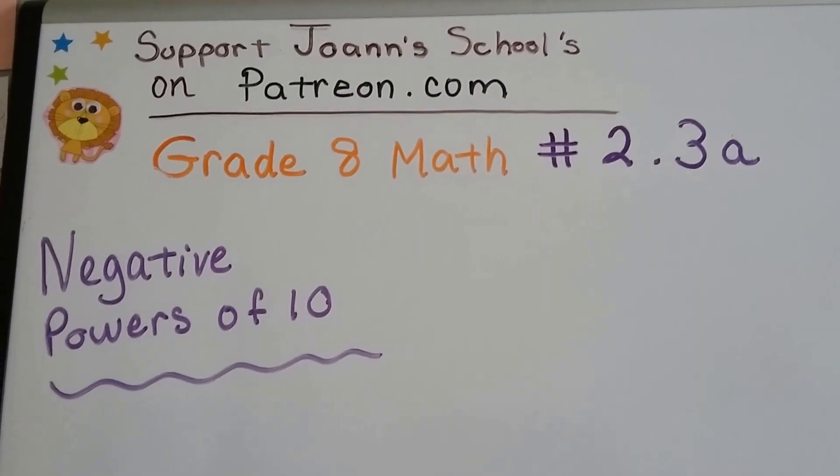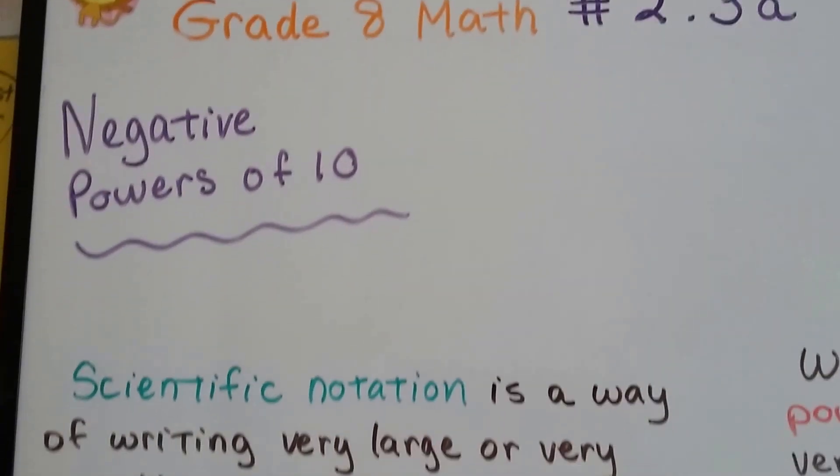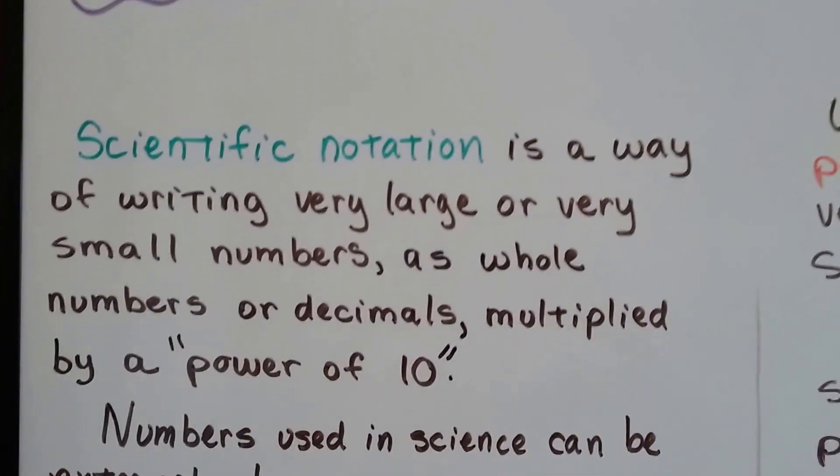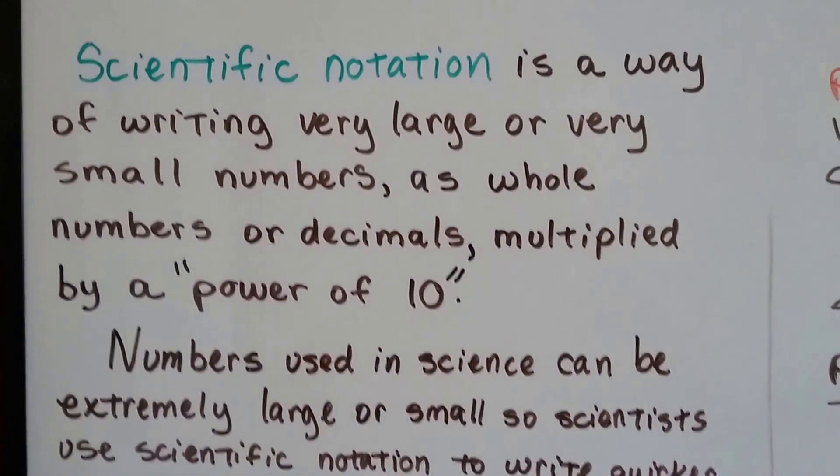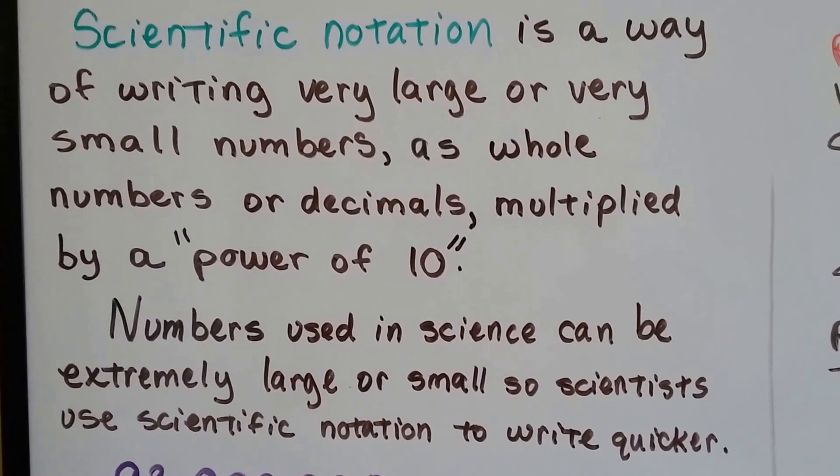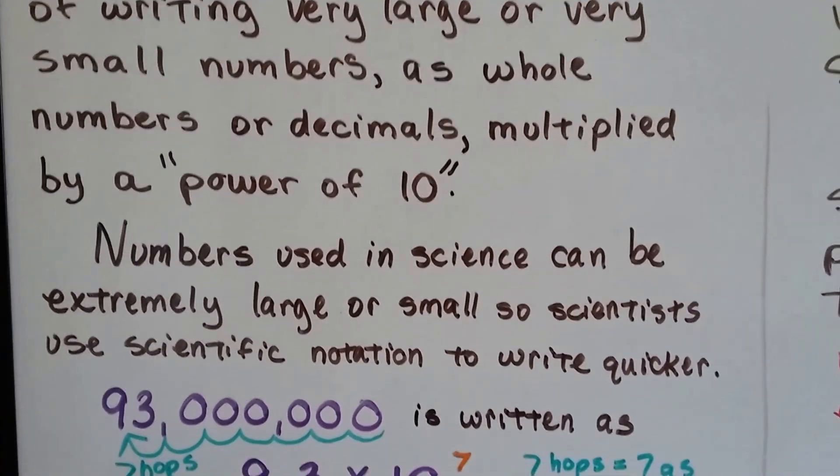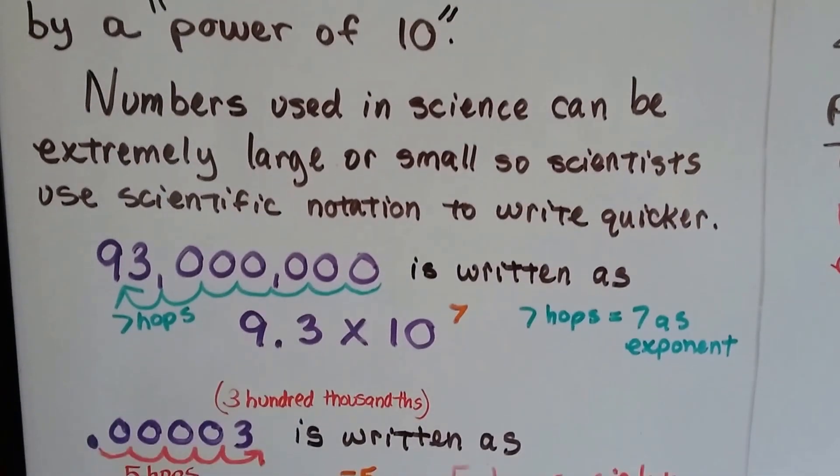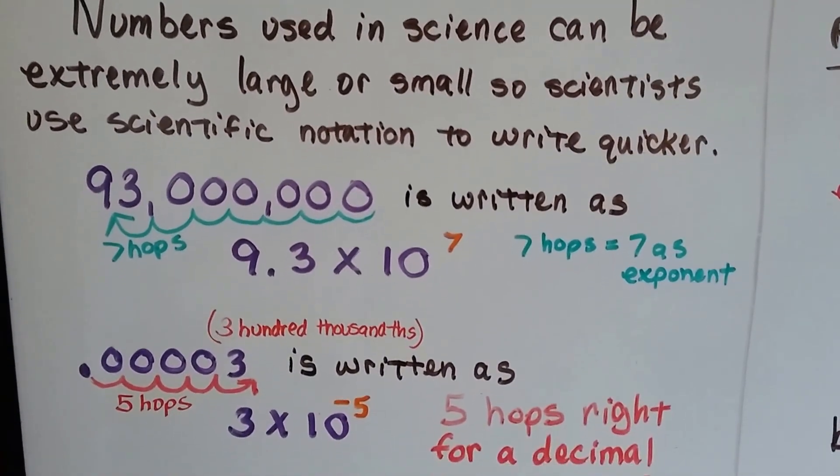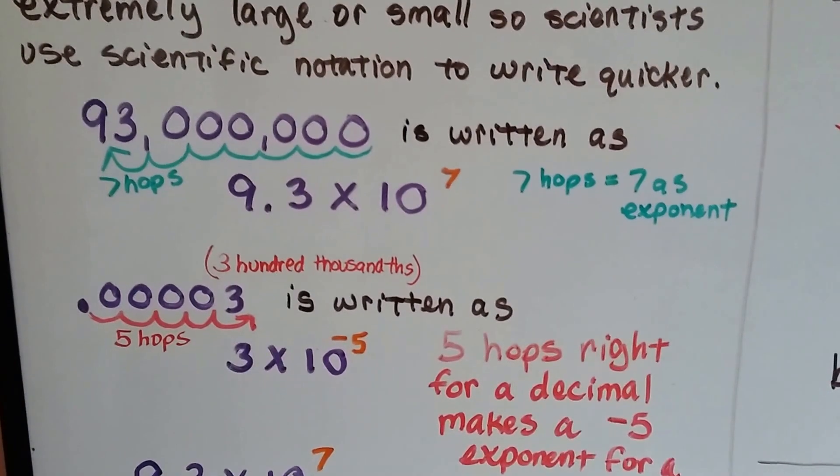Grade 8 math, number 2.3a: negative powers of 10. We've been talking about scientific notation for the last couple of videos, and we know now that it's a way of writing very large or very small numbers as whole numbers or decimals multiplied by a power of 10. Numbers used in science can be extremely large or small, so scientists use scientific notation to write quicker.